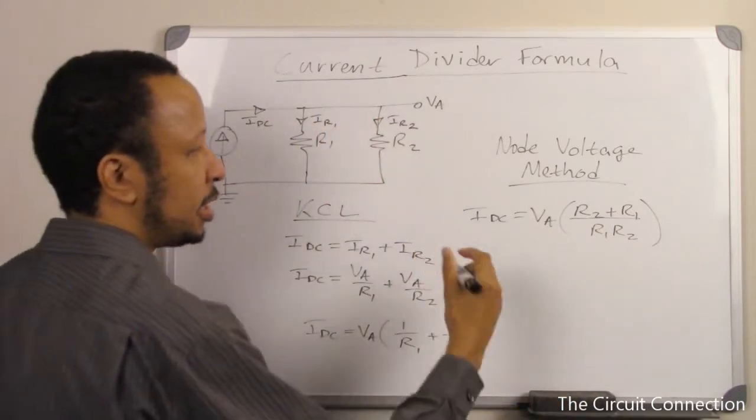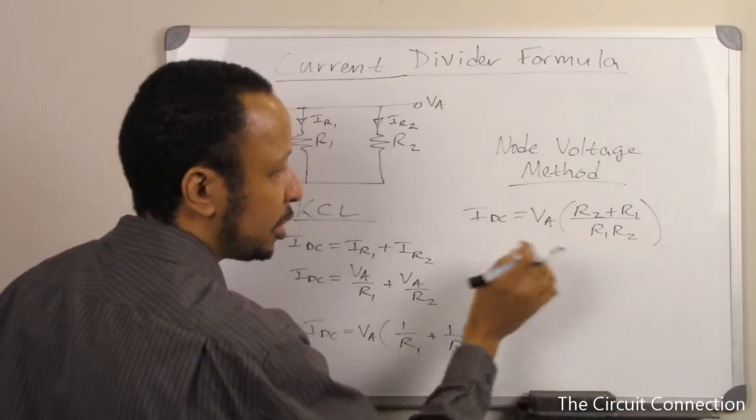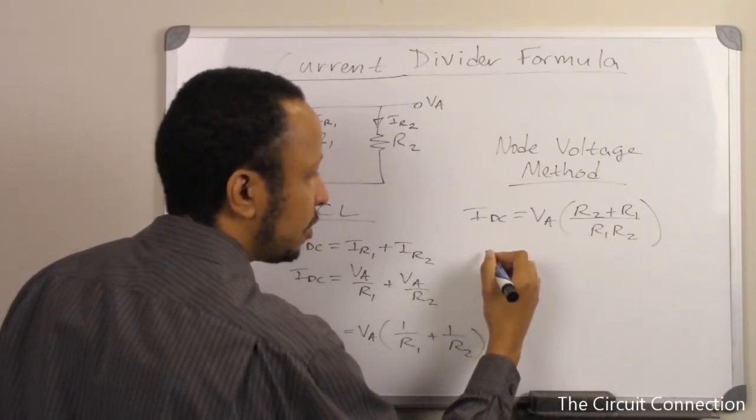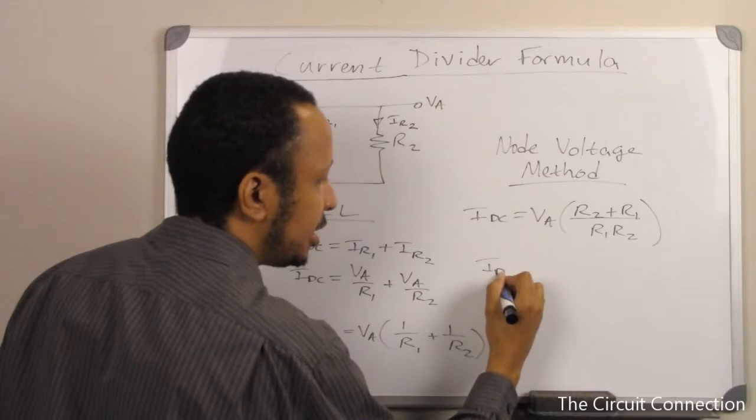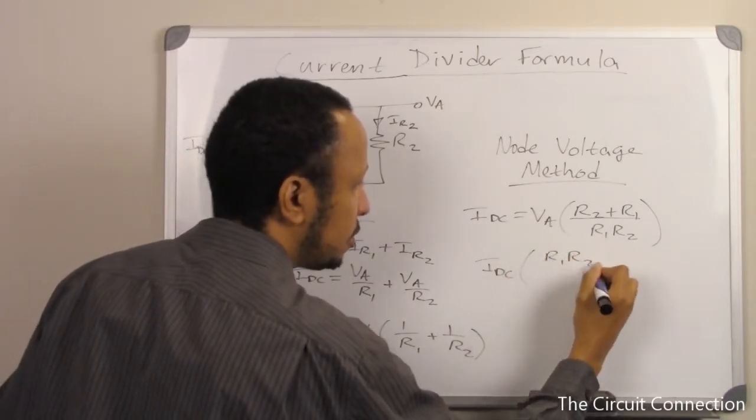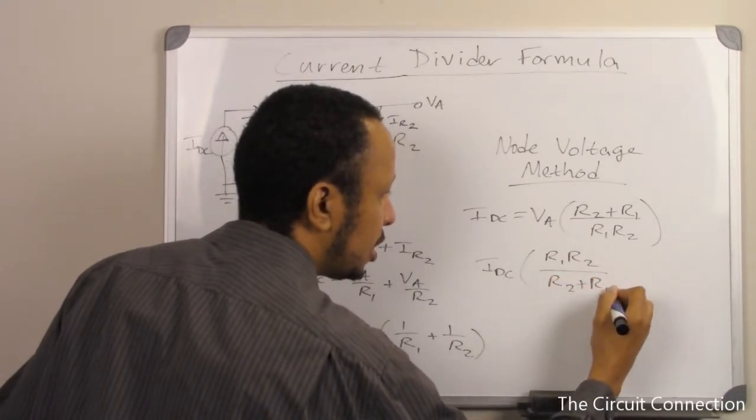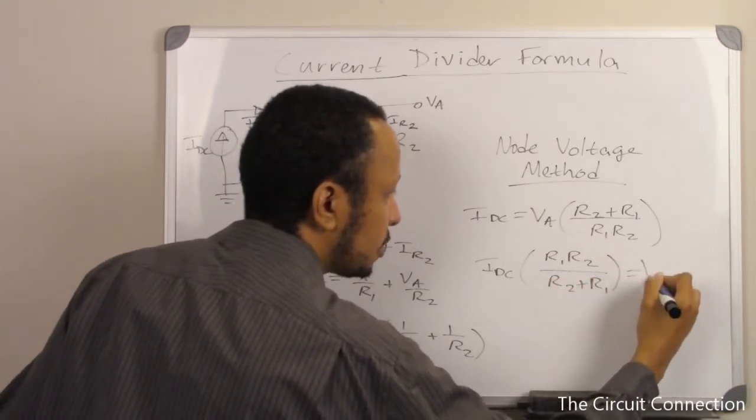Next, we'll bring this whole expression over to this side. And so, now we have IDC times R1 R2 over R2 plus R1 equals VA.